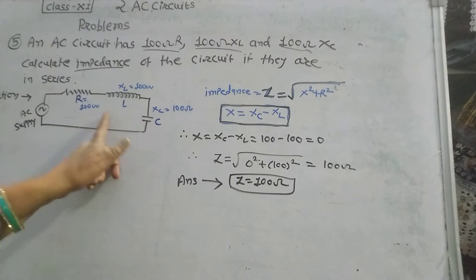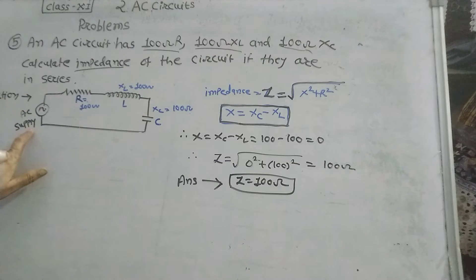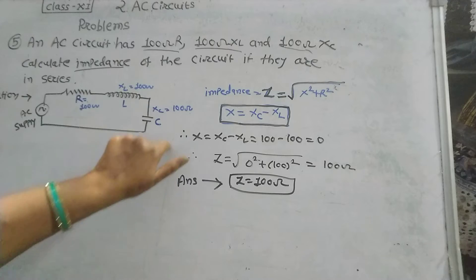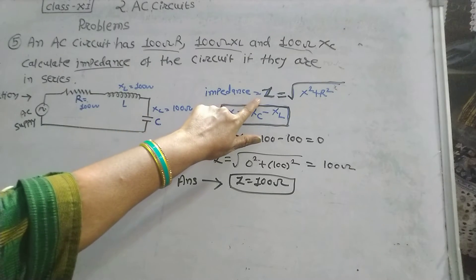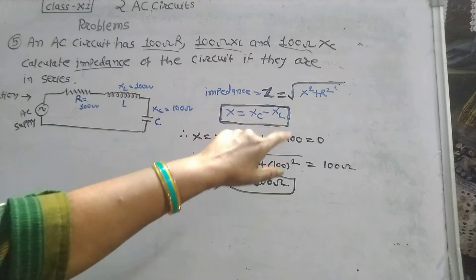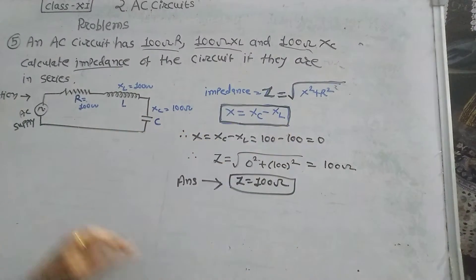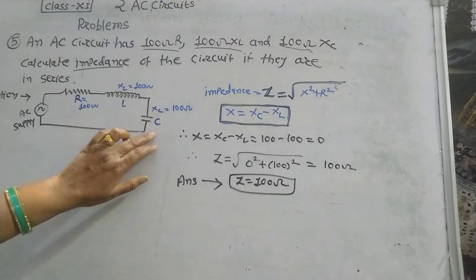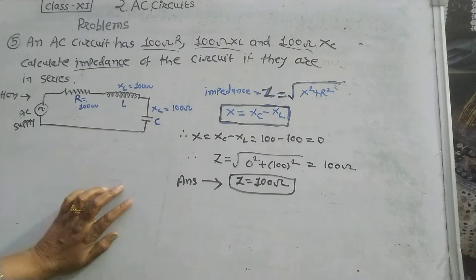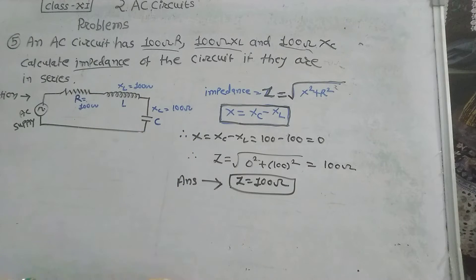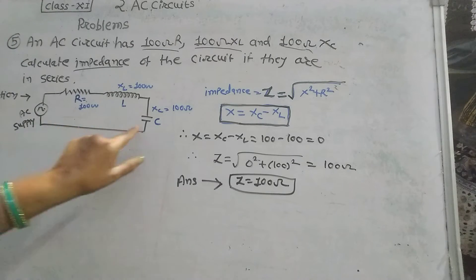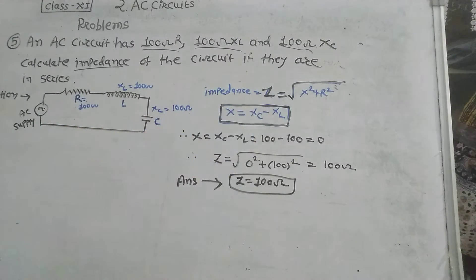For a series circuit with resistance, inductor, and capacitor, the impedance formula is Z equals square root of X squared plus R squared. For a parallel circuit, Z equals V divided by I-total, where I-total is the total current flowing through the circuit.